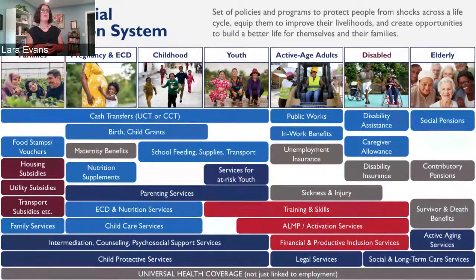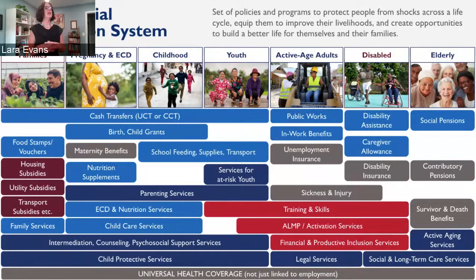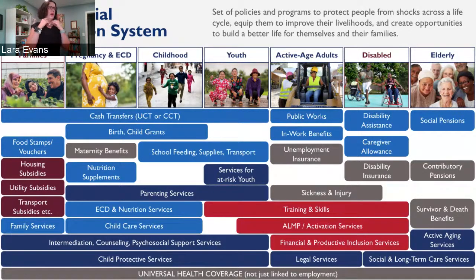This slide captures what a core social protection system looks like. For today's purpose, I'm speaking mostly of formal public sector national social protection systems, though there are also informal systems that work at the household, community, and regional level. It takes us back to the definition: a set of policies and programs that protect people across their life cycle and equip them for better opportunities in the future. Across a life cycle from families to pregnancy to childhood, there are different types of interventions that can be provided — that's what a comprehensive social protection system looks like.